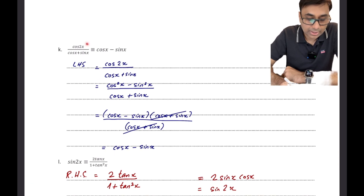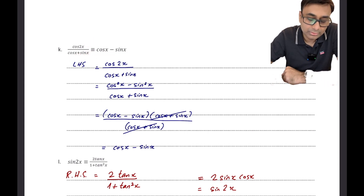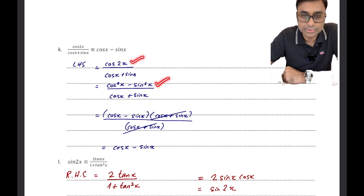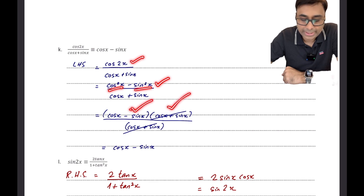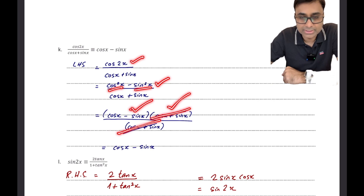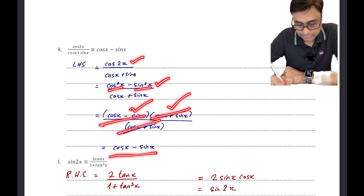Another example: cos 2x / (cos x + sin x). It's clearly evident I need cos 2x = cos²x - sin²x. This is a difference of squares so I apply (a - b)(a + b). Since cos x + sin x appears in both numerator and denominator, it cancels, leaving cos x - sin x, which is what I had to prove.